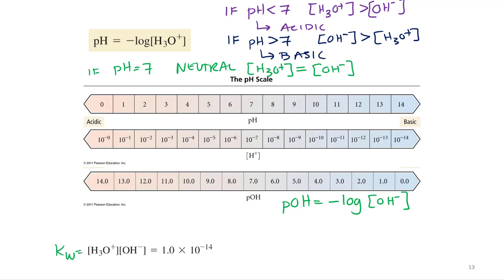The Kw is always going to be 1.0 times 10 to the negative 14. So, if you know the hydronium concentration, you can figure out the hydroxide concentration, and vice versa. This equation is always going to be there for you to help you out.